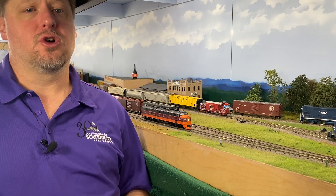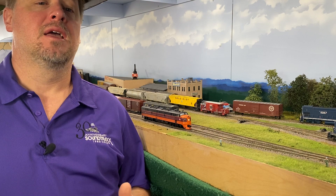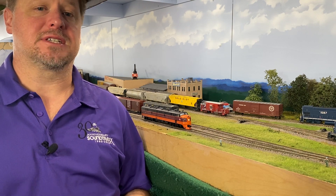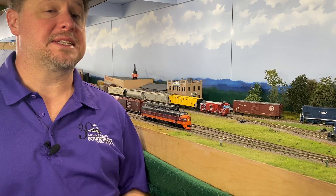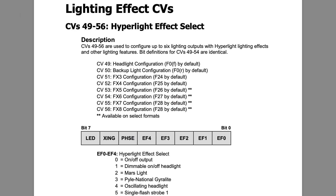With the DCC command, the decoder is told to turn on, for example, the headlight — the F0. So with the F0, it turns on the lighting effect. Now when the decoder does this, it has several CVs that it references through a checklist to make sure it performs the task as you desire. First off is what's called the hyperlight effects, where you can trigger certain lighting effects such as Mars lights, gyro lights, rotary beacons. You can even turn on an on-off constant dim light. The CV determines how the light is going to be displayed when the DCC system tells the decoder to turn on that lighting effect. These are in CVs 49 through 56.